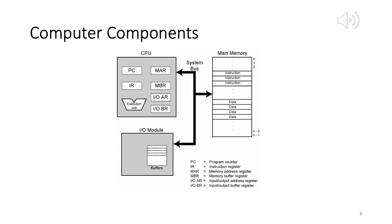The MBR stores contents for transfer — data grabbed from memory to the CPU, or data transferred from CPU to memory. There is bidirectional communication between CPU and main memory. Similarly, there is a pair of registers for IO: an IO address register specifying a particular IO device address, and an IO buffer register used for exchanging data between the processor and the IO module.